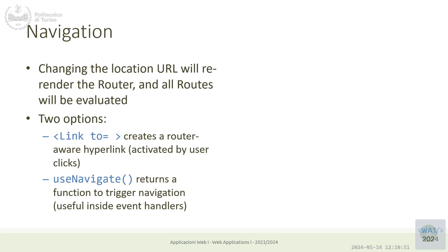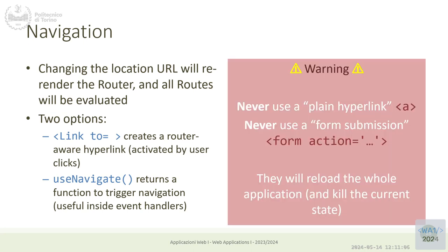If you want to navigate by clicking a button or some other action in a callback function, use the useNavigate hook, which gives you a navigate function. Forget the old navigation mechanisms handled by the browser — no hyperlinks, no form actions. Everything should be done with Link and useNavigate if you want the router to work, otherwise the whole application will reload.